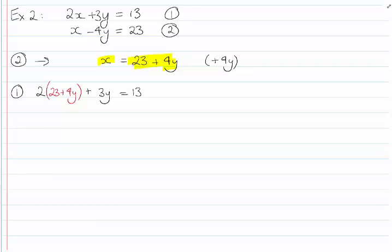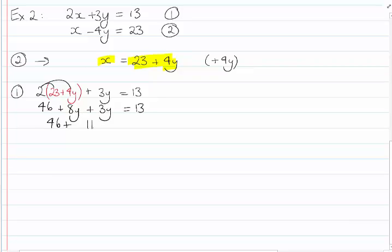So I can do that, of course. Now that I've done that, I'm relying on you having some basic Expanding Bracket Skills, Simplifying Algebra Skills here. So I do 2 times 23, 2 times 4y gives me 46 plus 8y plus 3y equals 13. Simplify, 46 plus 11y equals 13.